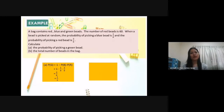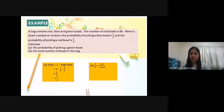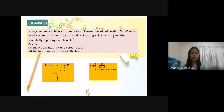(b) Find the total number of beads in the bag. Given that the number of red beads is 60, we compare the probability of red beads (3/8) with the actual count: 3/8 = 60/total. Cross-multiplying gives 3 × total = 8 × 60, so total = 480 ÷ 3 = 160. The total number of beads in the bag is 160.